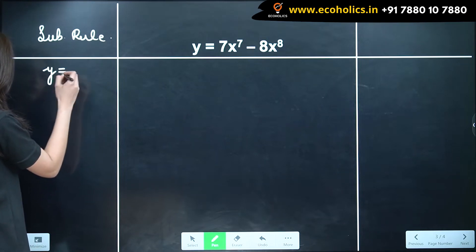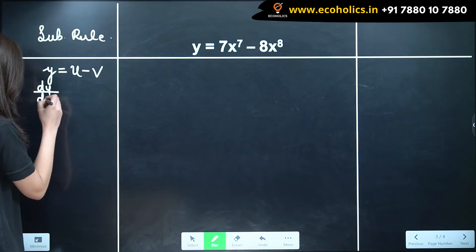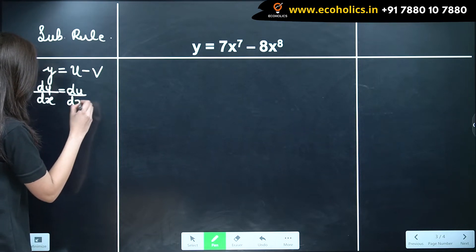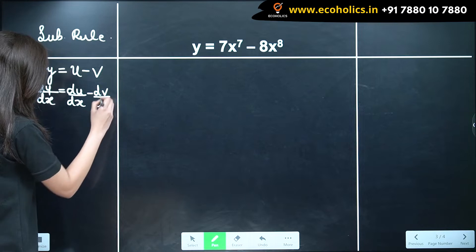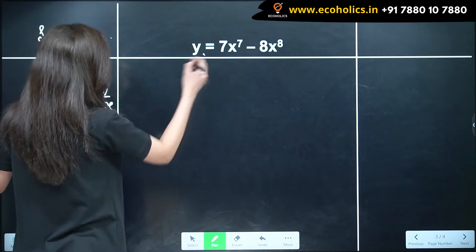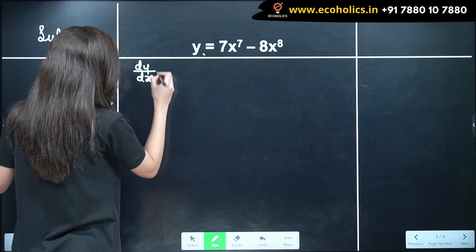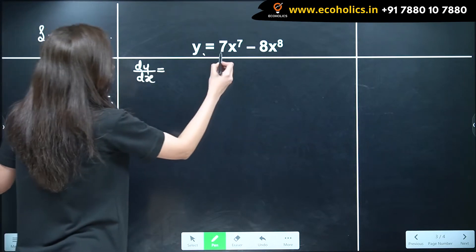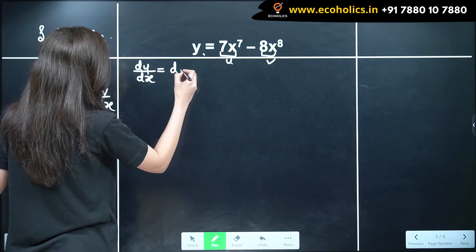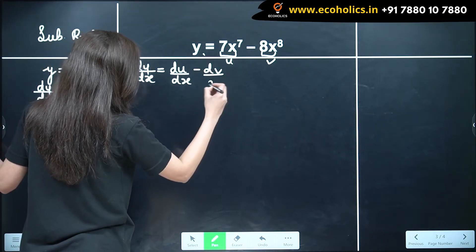Our subtraction rule states that when y is equal to u minus v, dy by dx is equal to du by dx minus dv by dx. Using this rule, we are going to solve this example. Let's consider the first term as u and the second as v, so we have du by dx minus dv by dx.